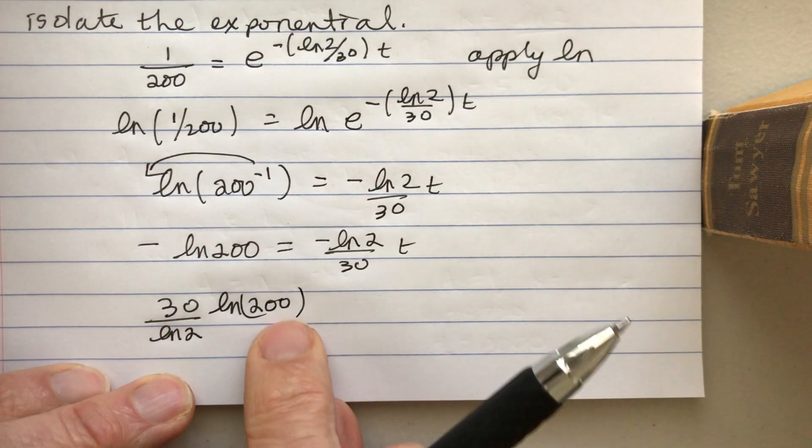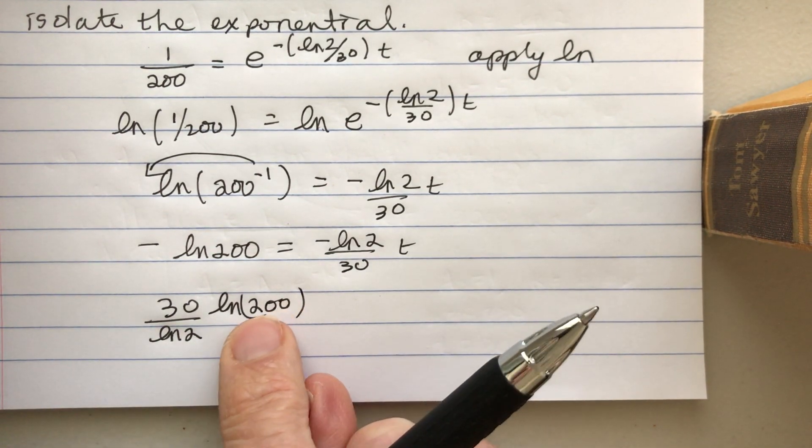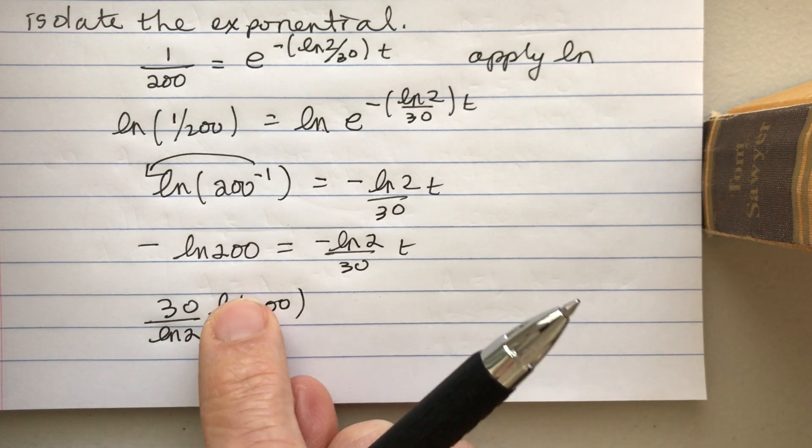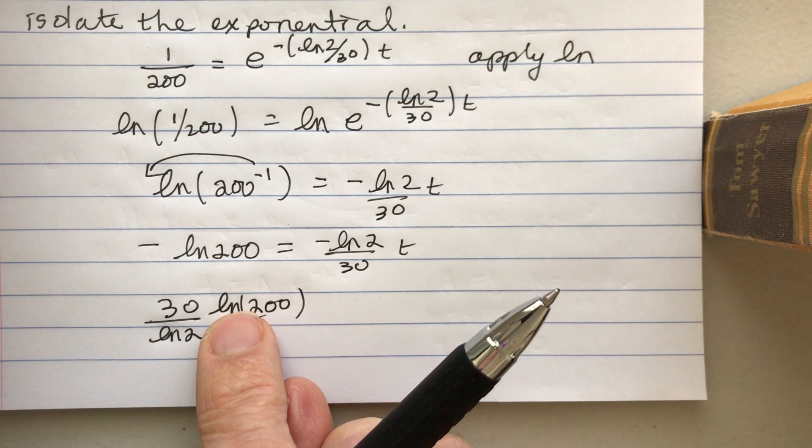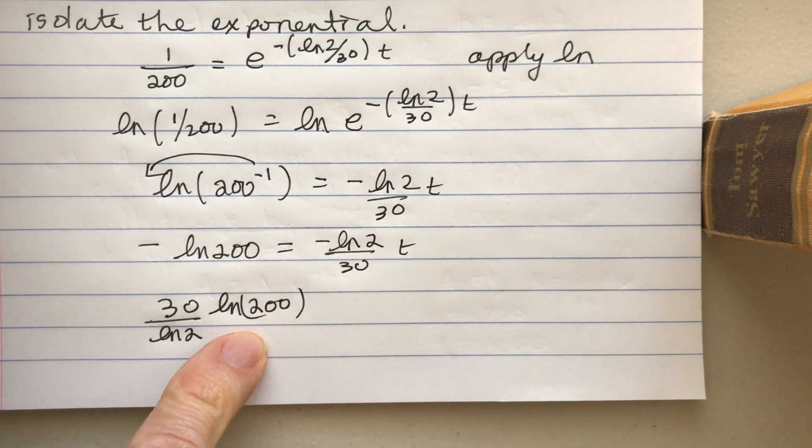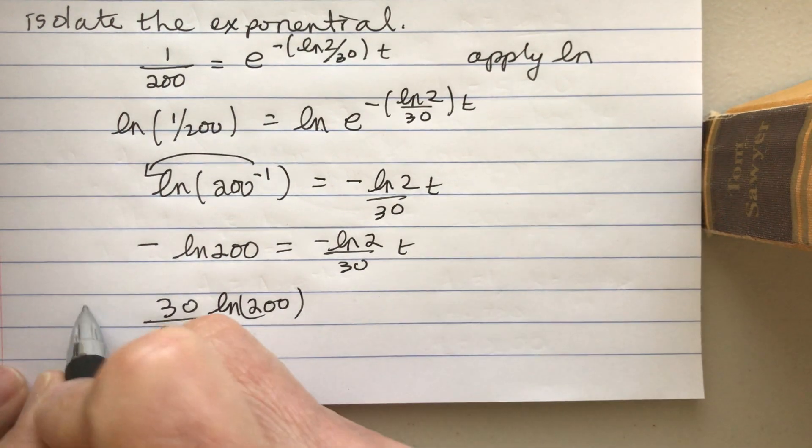One of the things is don't try to do some cancellation with the 2 and the 200. Remember, if you expand this ln(200), you would use a sum rule or product rule, so it doesn't cancel out. And that's t.